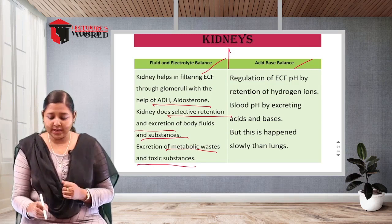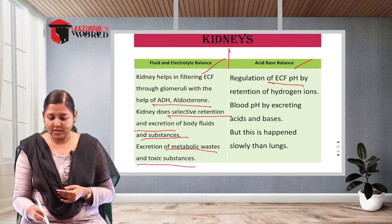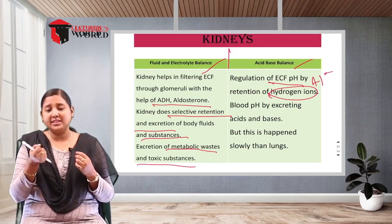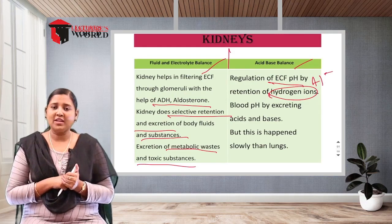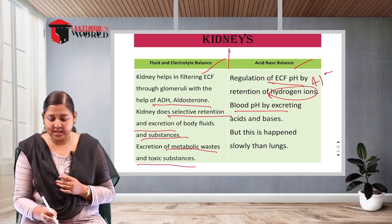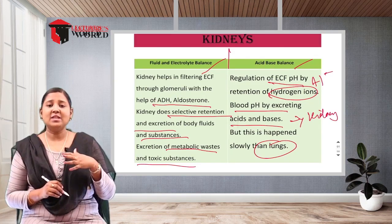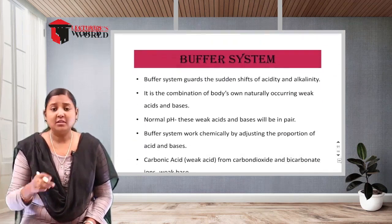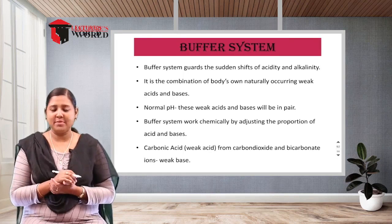For acid-base balance, the kidneys regulate extracellular fluid pH by retaining hydrogen ions in the glomeruli, reabsorbing them back into the extracellular fluid. Blood pH is maintained by the kidneys excreting acids and bases. However, the lungs act more quickly — deep exhalation rapidly removes acidic content — while the kidneys perform this function more slowly.